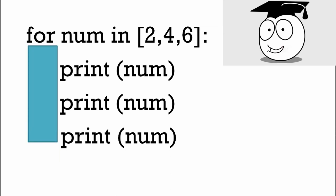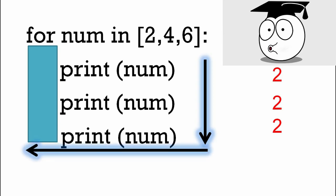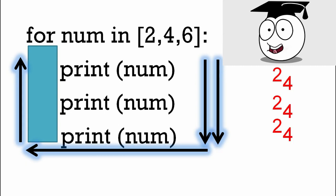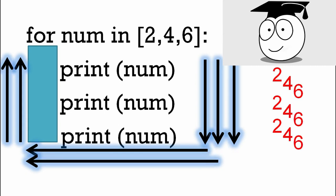So here we're going to print two, two, two. But it's going to loop round and then print four, four, four. And then loop round and print six, six, six. That's why it's called a loop.